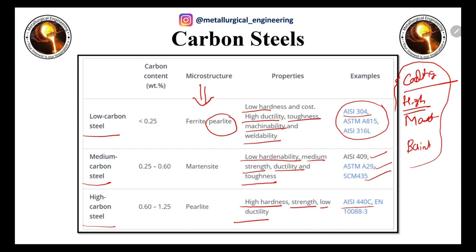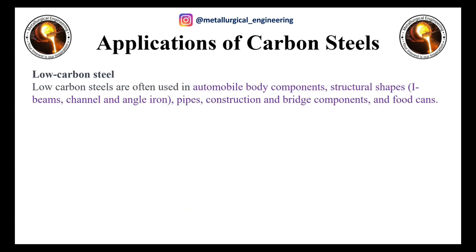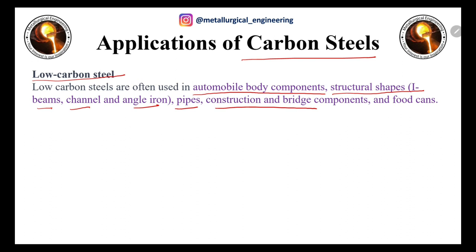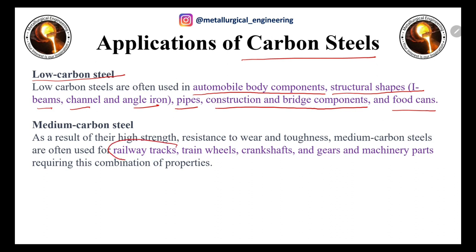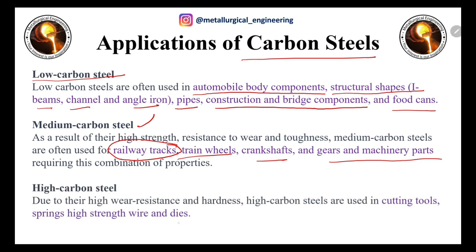Applications of carbon steel: low carbon steel is used in automobile body components, structural shapes like I-beams, channels, angle iron, pipes, construction components, and food cans. Medium carbon steel is used in railway tracks, train wheels, crankshafts, gears, and machinery parts. High carbon steel is mainly used in cutting tools, springs, high-strength wires, and dies.